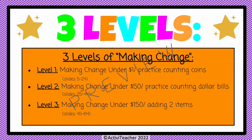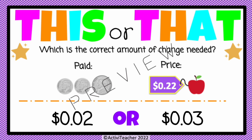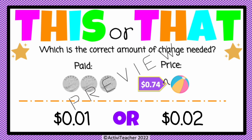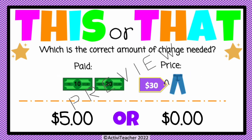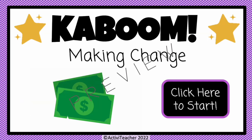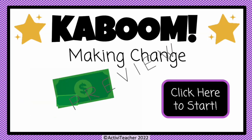This activity is leveled like all the others, so you can pick a level to meet your students' needs. For example, the student paid 25 cents and the price of the apple is 22 cents — the correct change is three cents, so students move to the matching side or hold up two fingers. There are also levels involving dollar bills.